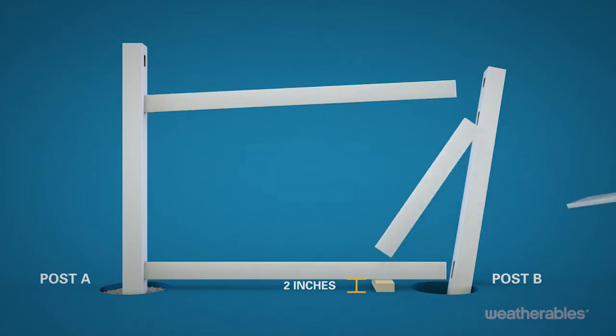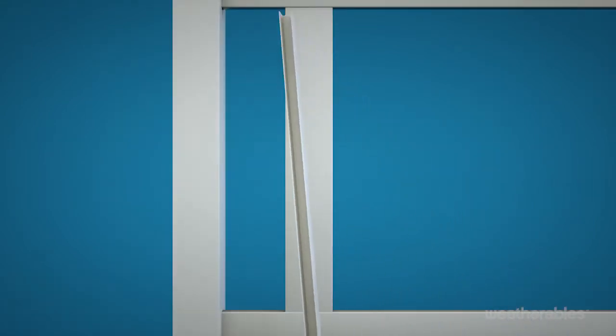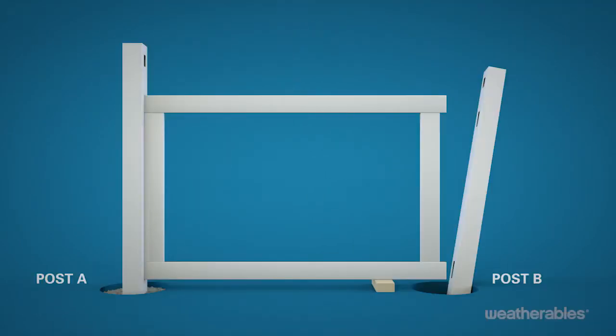Slide the first two tongue and groove pickets in between the mid and bottom rails. Continue sliding the first picket between the mid and bottom rails until it's approximately 12 inches from post A. Then, slide the U channel into place before sliding the picket the remainder of the way toward post A until it is flush with the post. Leave the second picket in place near post B.